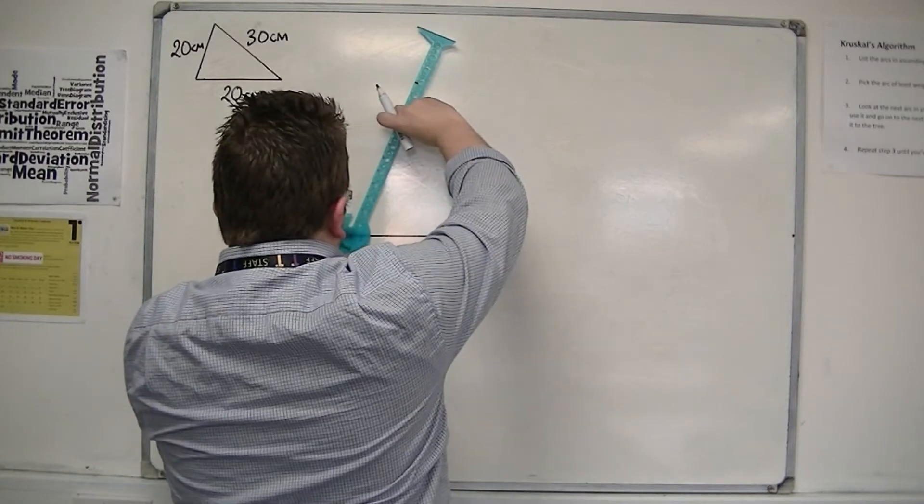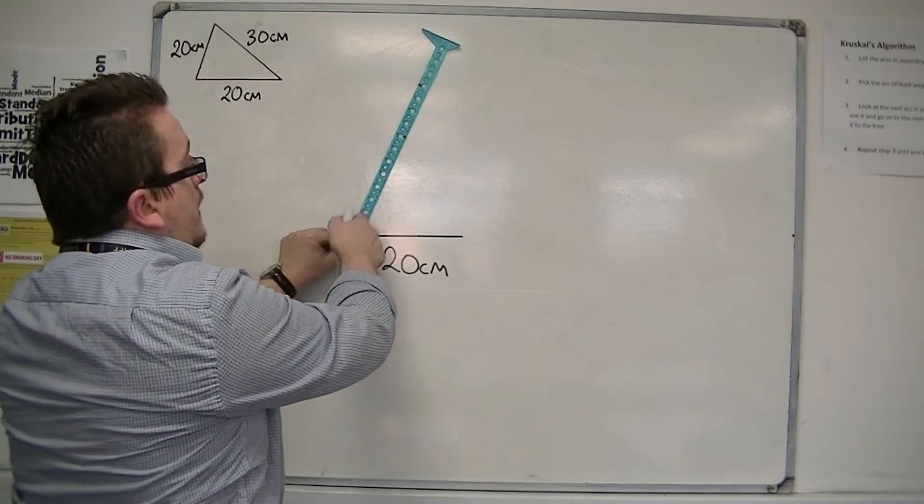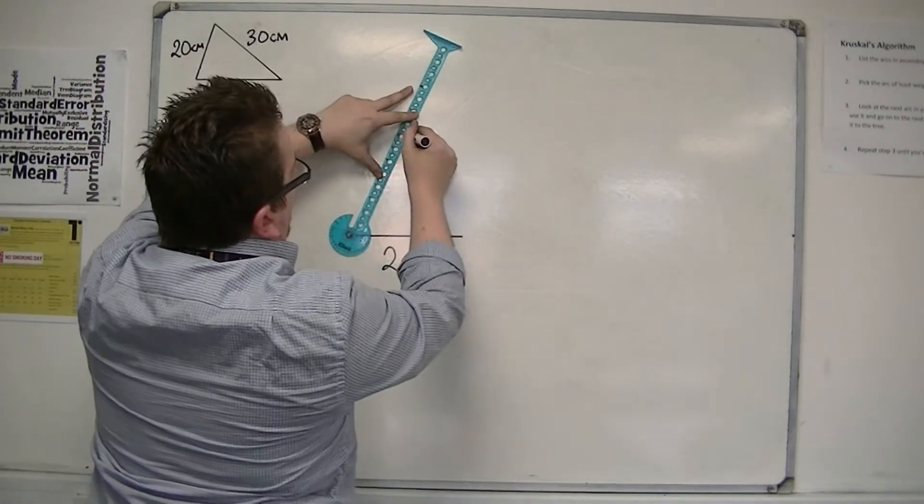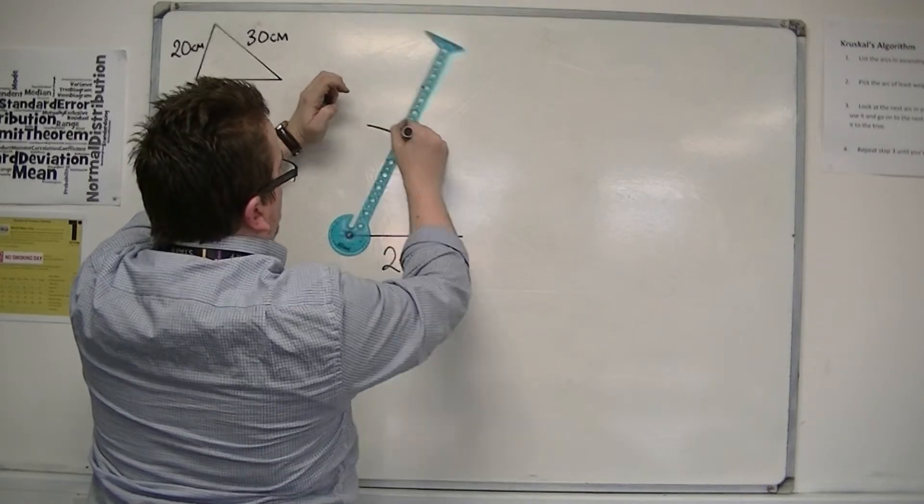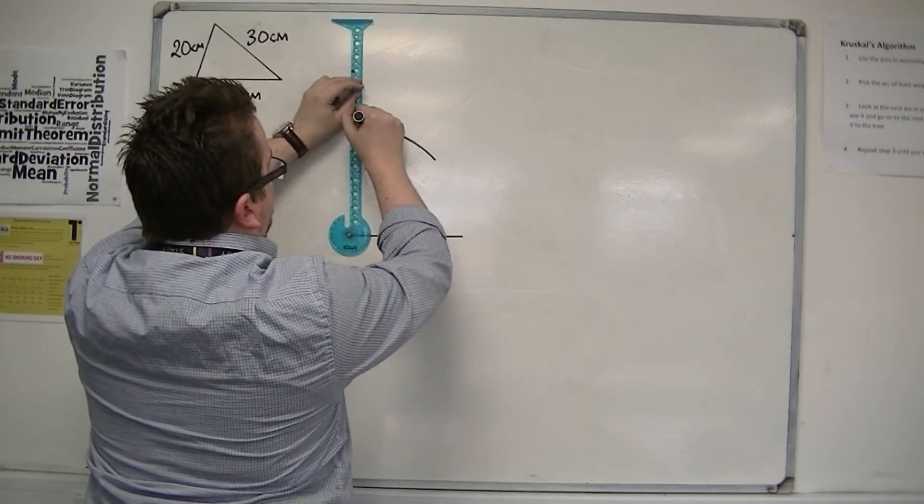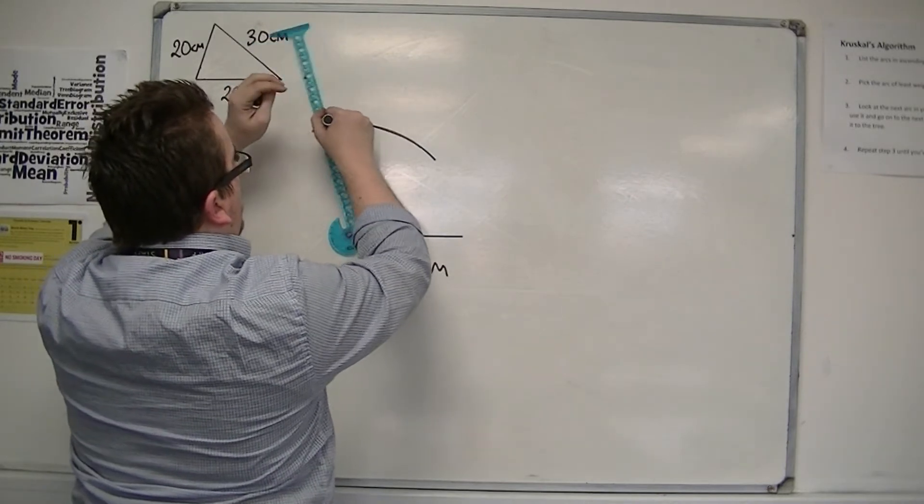I put my sharp point of the compass on the corner, and then I make an arc at 20 centimeters, like so. I might actually just go around a little bit more.